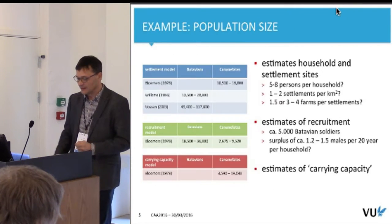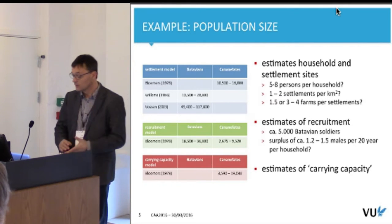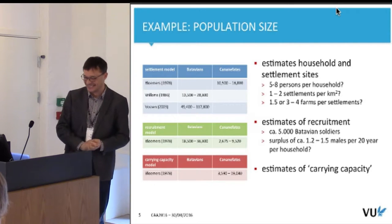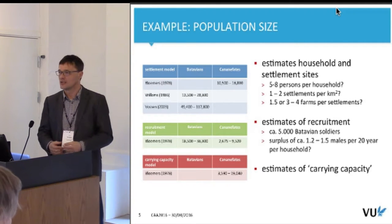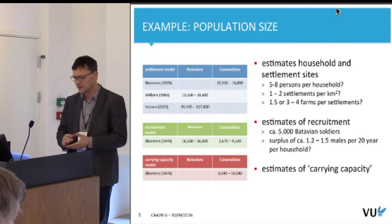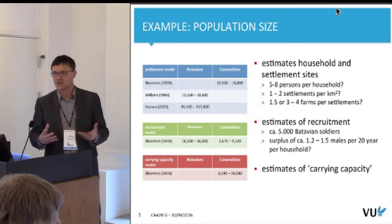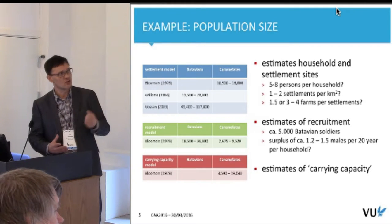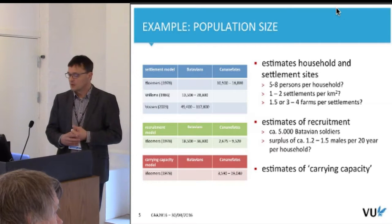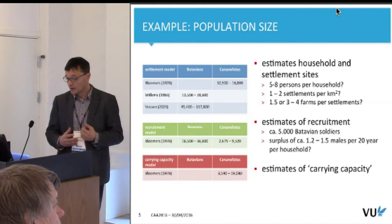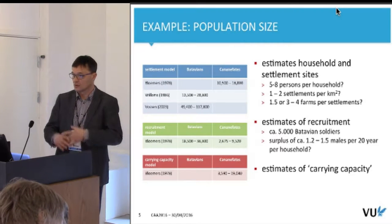I'm going to show you a small model that I built myself, which was completely devastated by Tom Bruchman when I put it into review. It's about estimates of population size in the area, which people have been talking about for quite some time — trying to estimate on the basis of archaeological data how many sites there are, how many people would have lived in those sites. There are also estimates based on historical data. The recruitment is described in Roman sources — we know the size of the legions needed. On the basis of crude demographic models, people have suggested something like a 1.2 to 1.5 male surplus per household per 20 years, and there have been attempts to estimate the carrying capacity of the area.